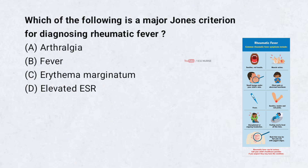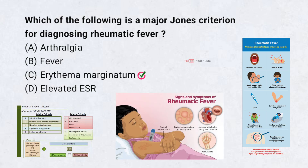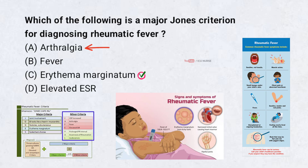Which of the following is a major Jones criterion for diagnosing rheumatic fever? A. Arthralgia, B. Fever, C. Erythema marginatum, D. Elevated ESR. Correct answer: C. Erythema marginatum. The Jones criteria help in diagnosing rheumatic fever. Erythema marginatum, a non-itchy rash with a wavy border, is a major criterion. Arthralgia, fever, and elevated ESR fall under minor Jones criteria.